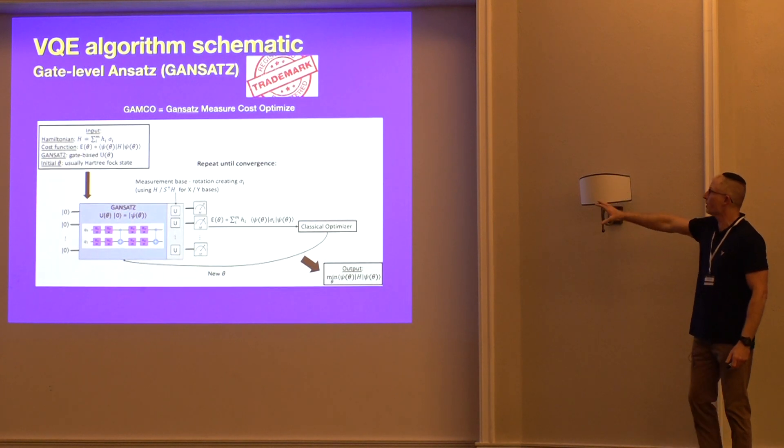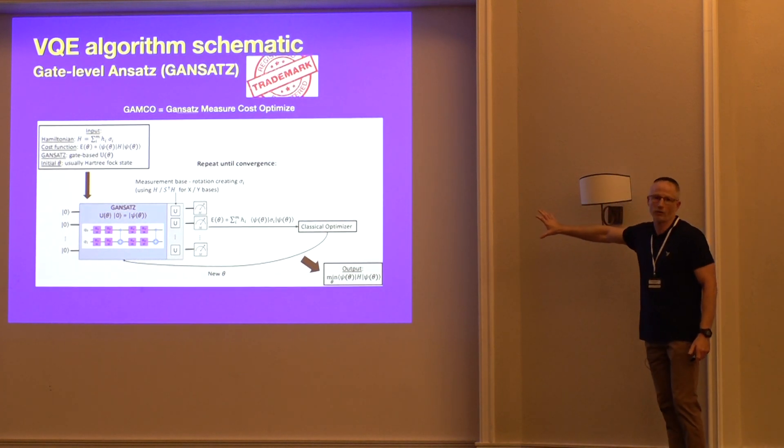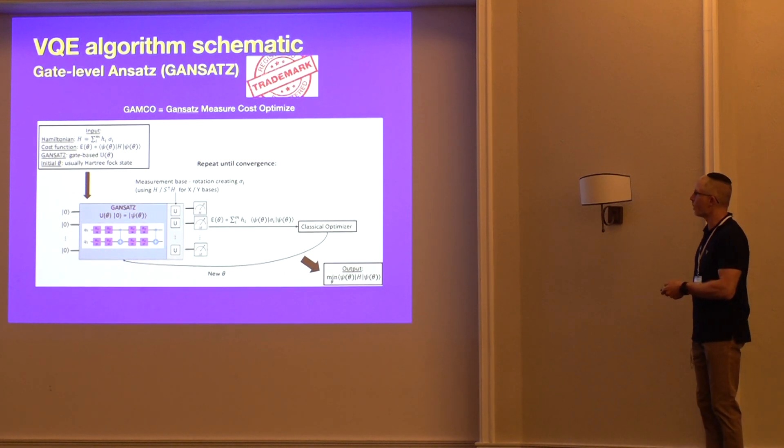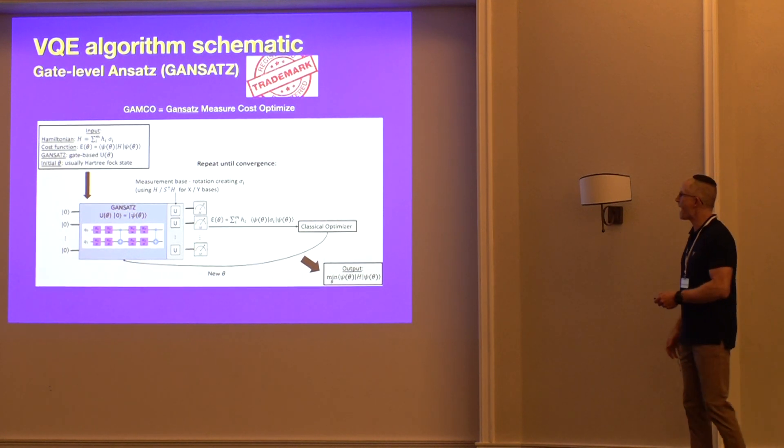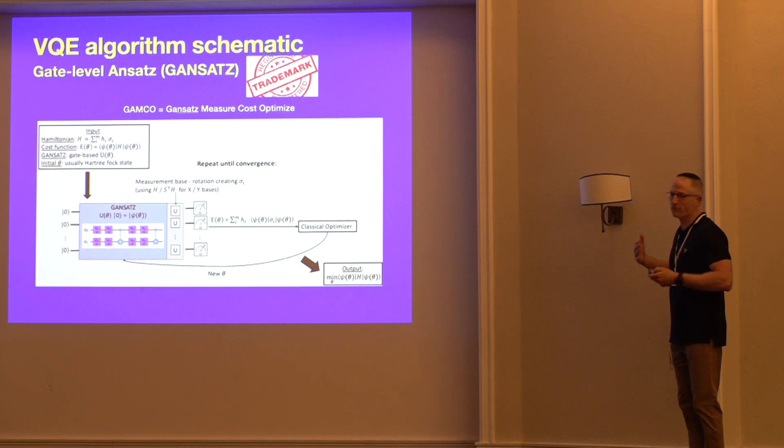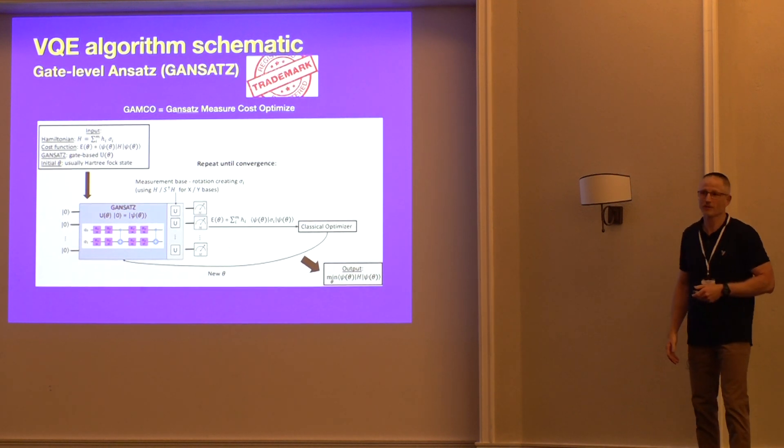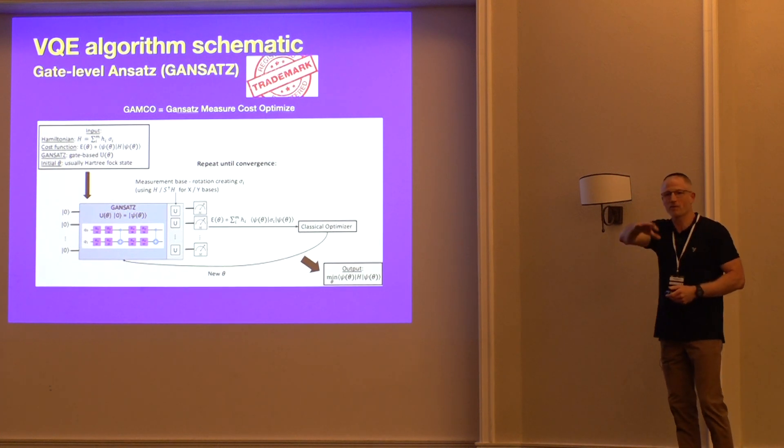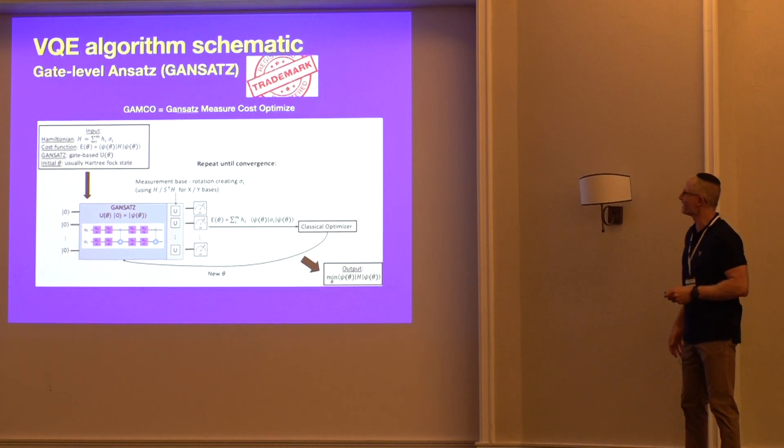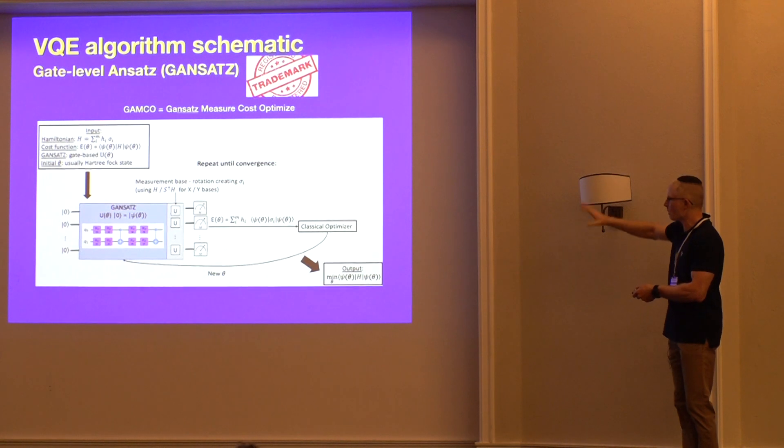Let's set the stage here. This is the VQE algorithm, which is a little bit more specific than the VQA in the context of what the Hamiltonian and the cost function look like. But otherwise, it looks, generally speaking, like a VQA. In the interest of introducing new terminology into the already acronym-rich field of quantum computing, we're going to call a gate-level ansatz, a gansatz. I want to see that stick, so everybody, you tell two friends, you tell two friends, and it'll keep going. But that's what we're effectively drawing here. Here is the gate-based ansatz or gansatz approach.